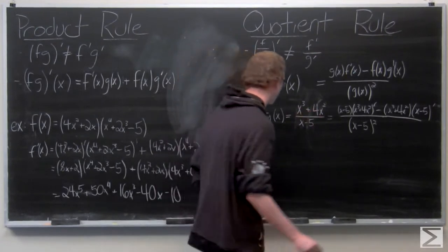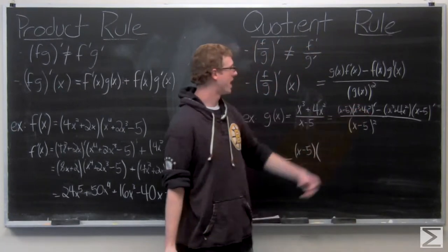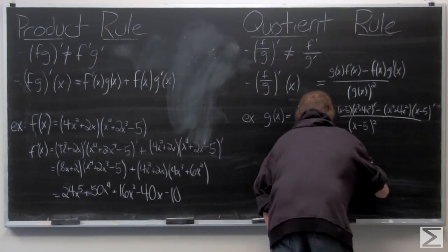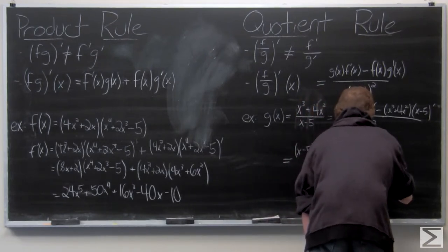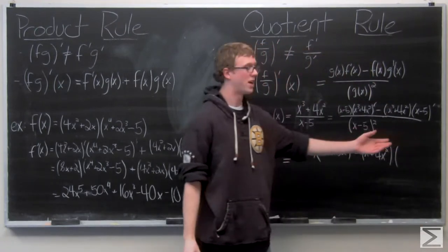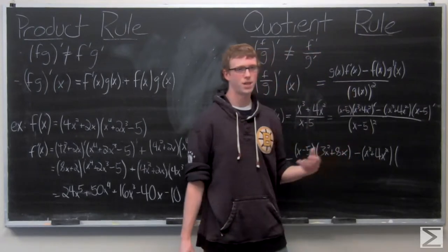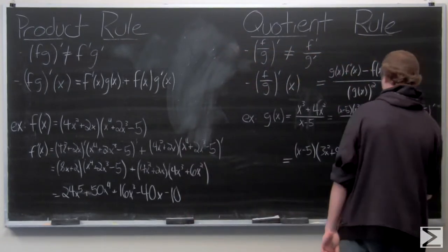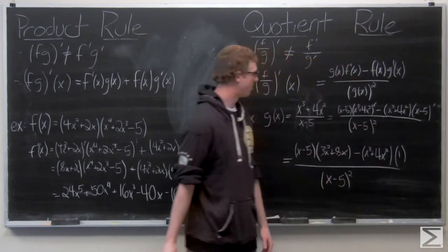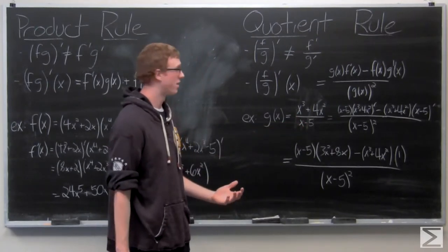We're going to go ahead and take those derivatives. The derivative of x cubed plus 4x squared is 3x squared plus 8x. And the derivative of x minus 5: the derivative of the constant 5 is 0, and the derivative of x is 1 times x to the zero, which is just 1. Now if you go ahead and multiply this all out, you're going to get an answer equivalent to the answer you'd get using the product rule on this function.